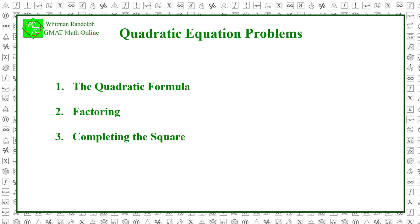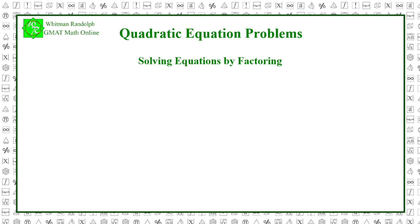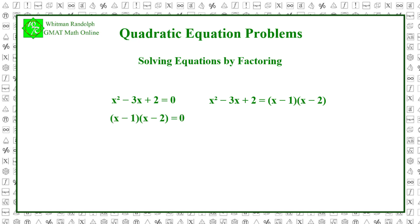First, we will show how to use factoring to solve an equation. Consider the first equation: x squared minus 3x plus 2 equals 0. The polynomial in this equation can be factored as x squared minus 3x plus 2 equals x minus 1 times x minus 2. Thus, we replace the original polynomial with its factored version: x minus 1 times x minus 2 equals 0.